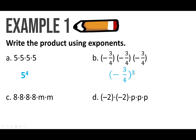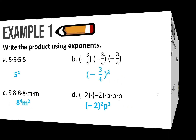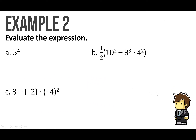You can consolidate them and that's going to be negative three-fourths to the 3rd power. For letter C, you have 8 times 8 times 8 times 8, which is 8 to the 4th power, times m times m, which is m to the 2nd power. For letter D, same thing: negative 2 times negative 2 is negative 2 to the 2nd power, and p times p times p is p to the 3rd power. That's it.